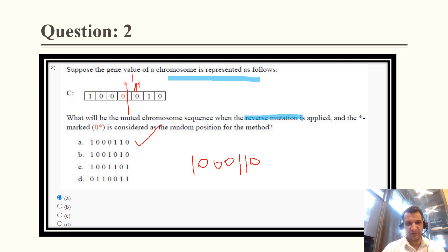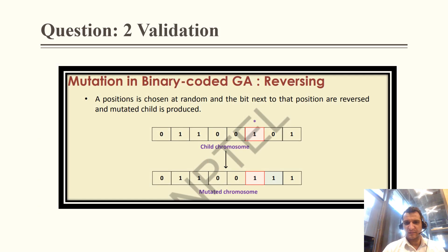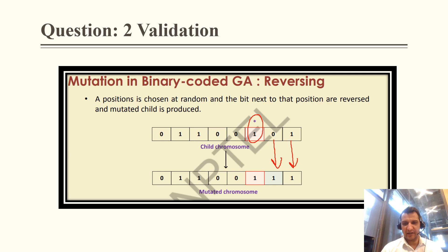The validation, as depicted in the PPT, shows 0 1 1 0 0 0 up to the crossover point. After that, 0 is reversed or flipped into 1, so 0 becomes 1, and after that the gene remains the same — 1 stays 1. This is the validation for question 2 and it will be 100% accurate.